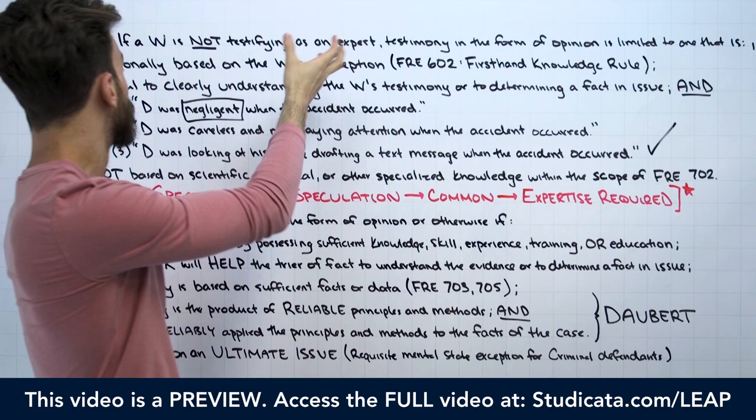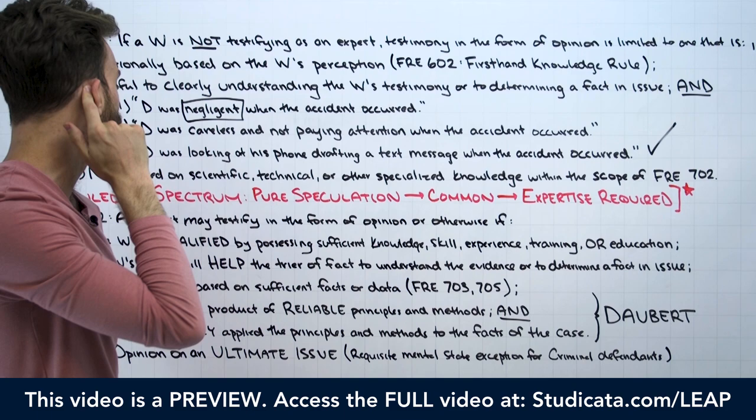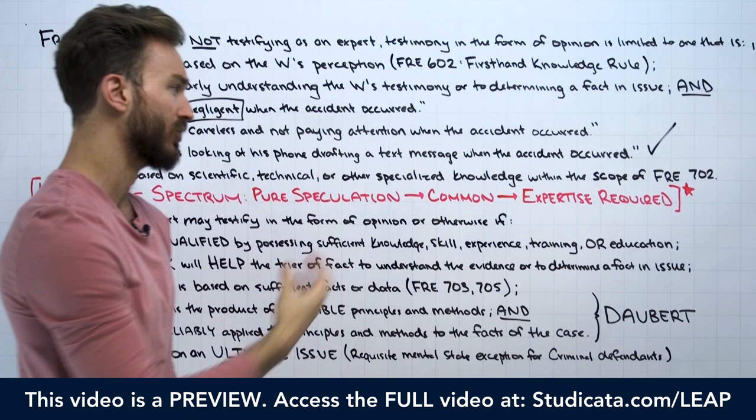Usually the witness will be able to get to an acceptable form of testimony, and that typically happens just through clarification — the lawyer continues to ask about it until the witness gets to the right point.